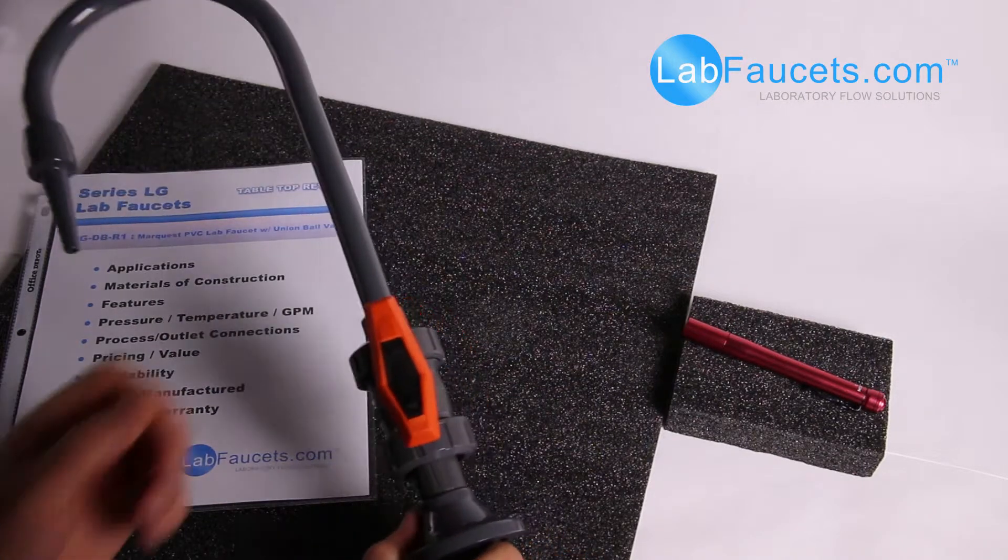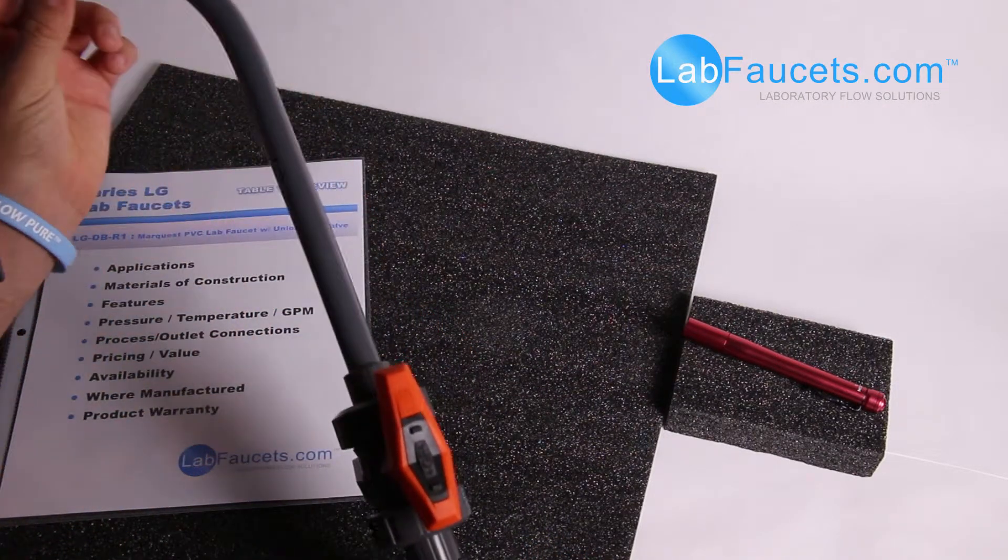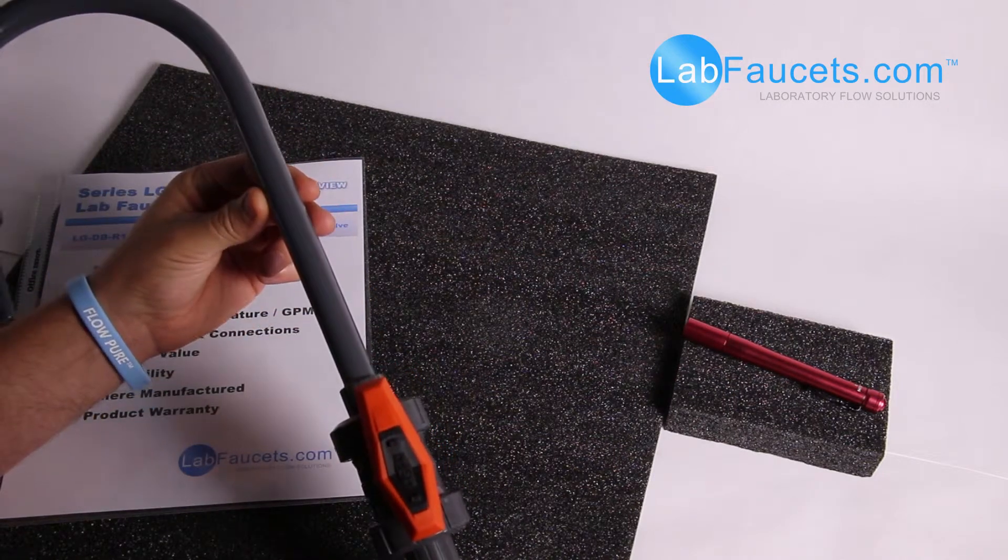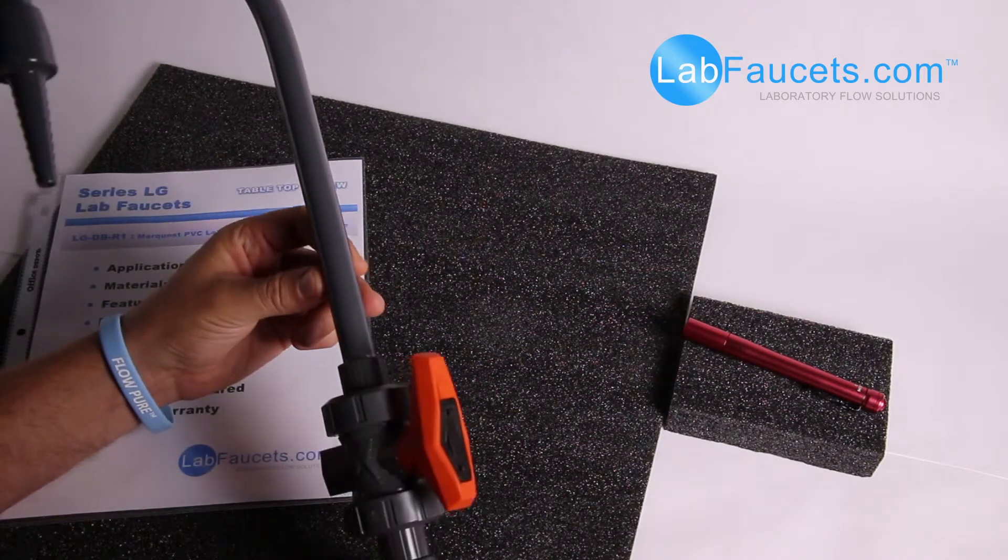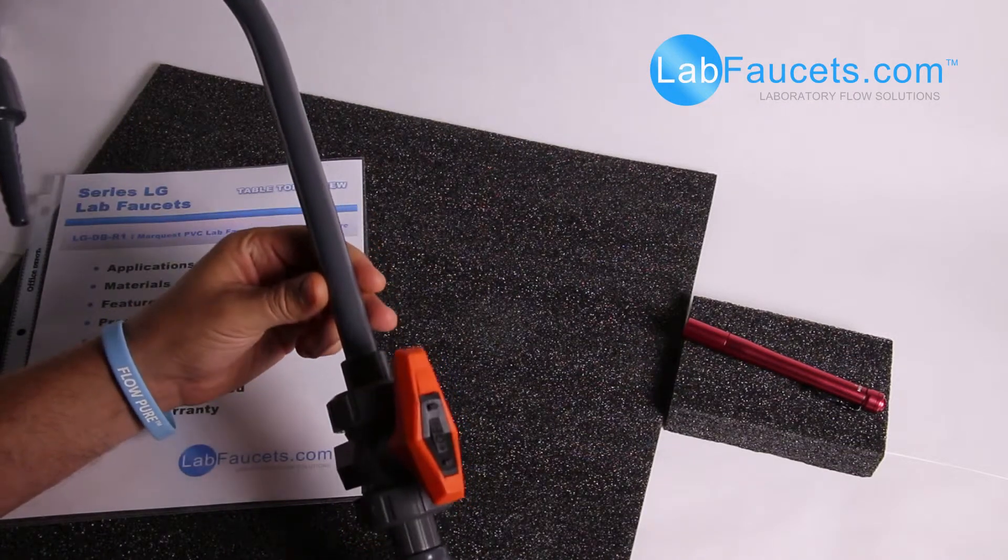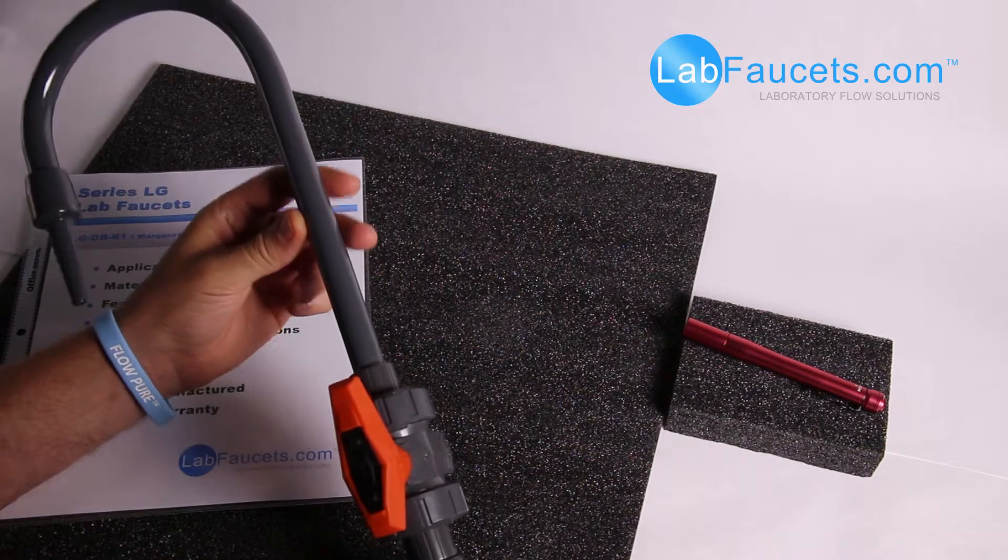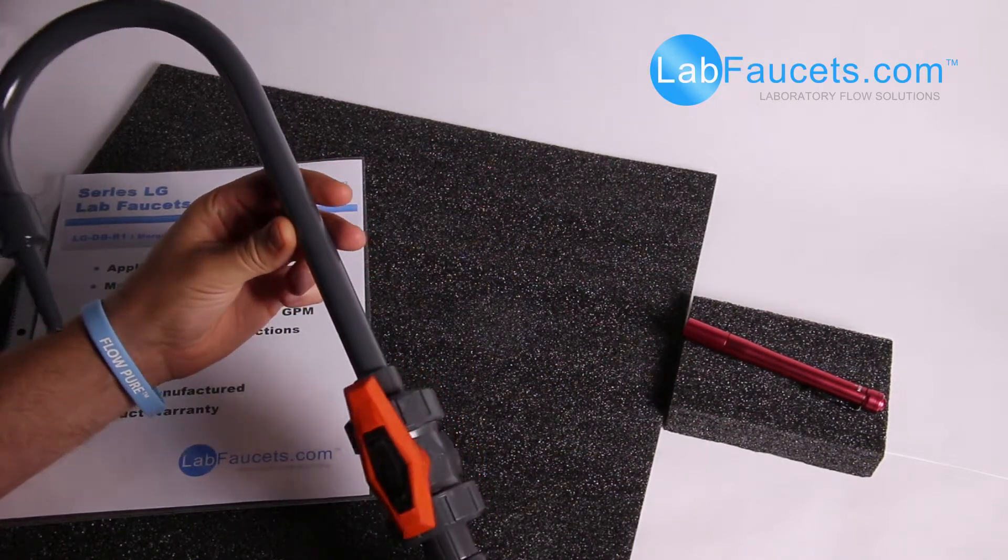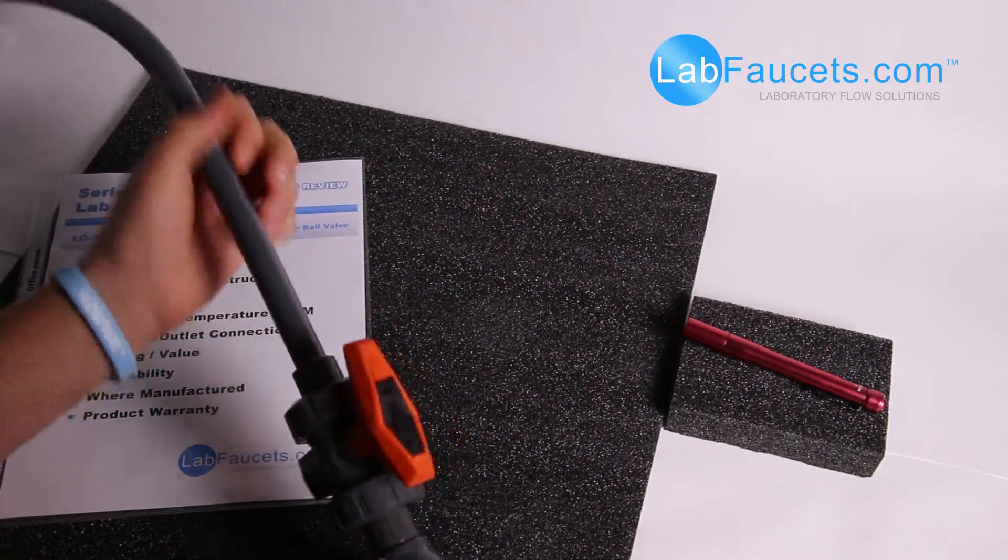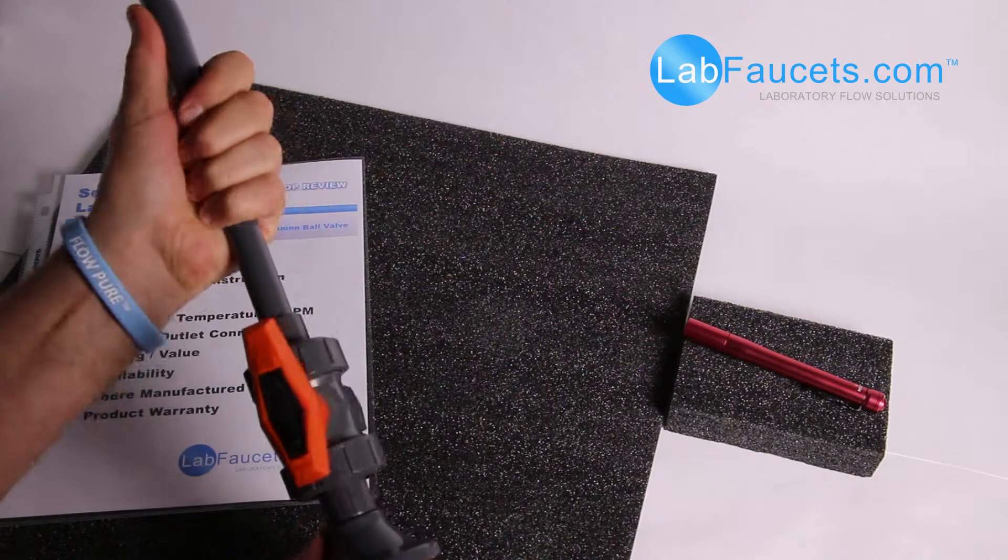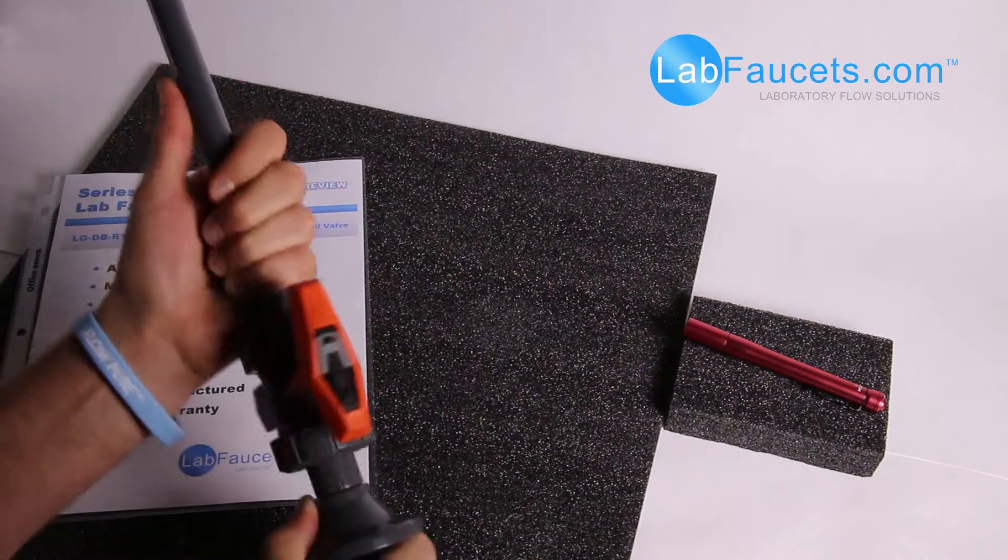The gooseneck, this PVC gooseneck is actually custom extruded, so it is not schedule 80 PVC pipe that you do see on other units in the industry. This being custom extruded, having a heavier wall section is going to add rigidity to the faucet. So this unit is quite rigid, very rugged.